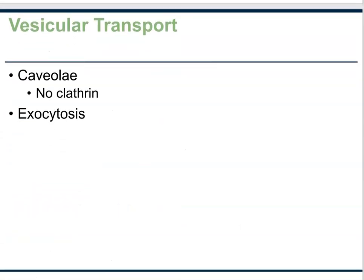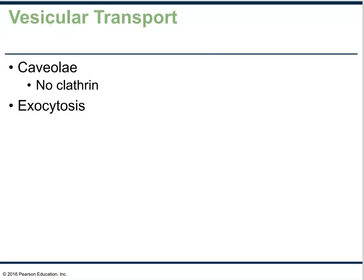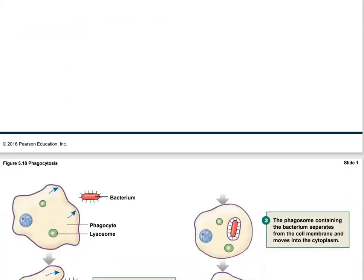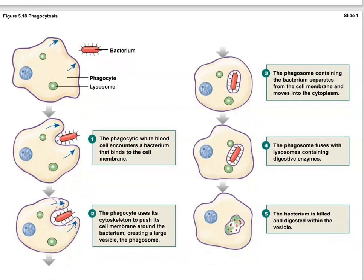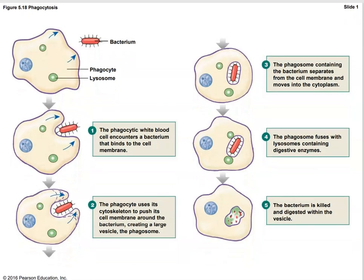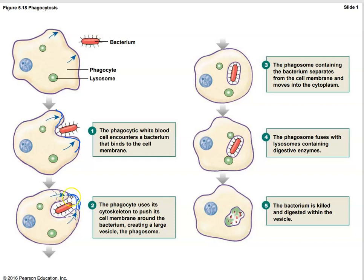Let's look at vesicular transport in a bit more detail and see how phagocytosis works. Here we have a neutrophil or macrophage and a bacterium that needs to be eliminated. The cell starts to form pseudopods — bulges that engulf the bacterium until it's fully enclosed and internalized inside a vesicle. Then we fuse a lysosome containing digestive enzymes with this vesicle, forming a phagolysosome, and the bacterium is killed and eaten up.